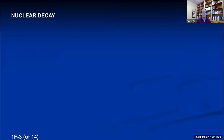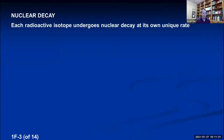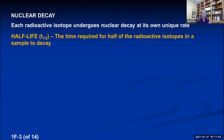Every single radioactive isotope decays at a different speed or rate — each radioactive isotope undergoes nuclear decay at its own unique rate. We measure how fast a radioisotope decays by something called its half-life, abbreviated as a lowercase t with subscript one-half. The half-life is the time required for half of the radioactive isotopes in a particular sample to decay away into something more stable.